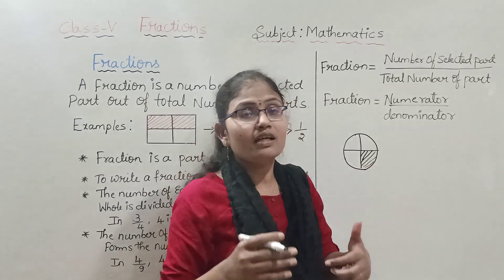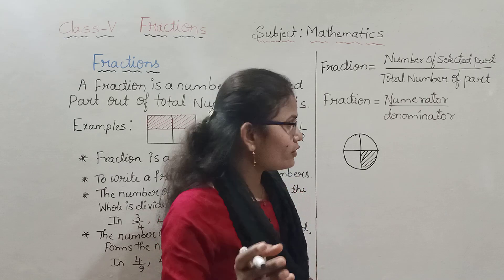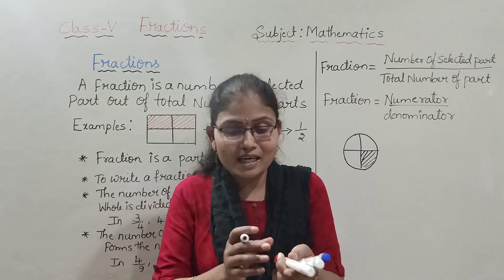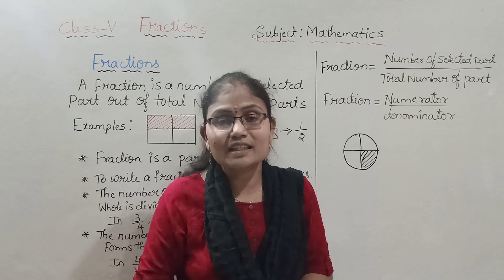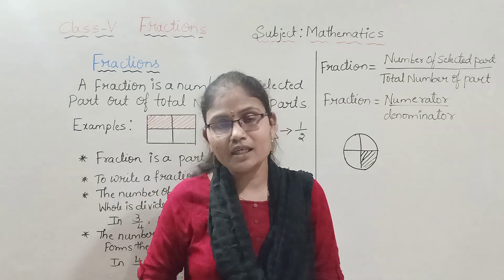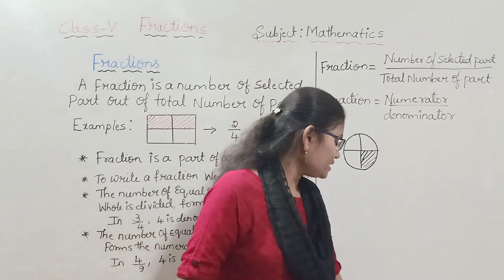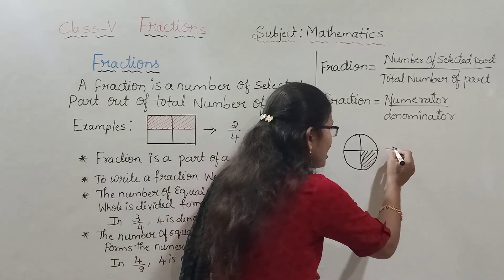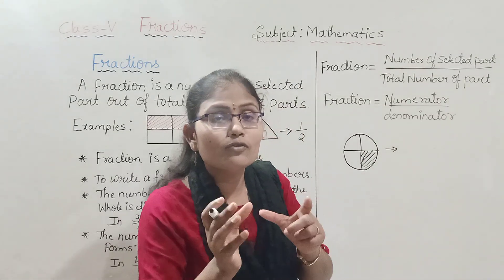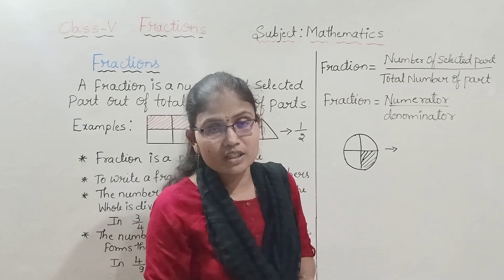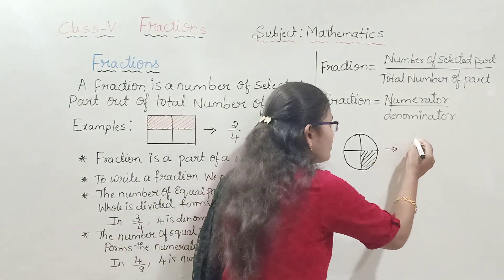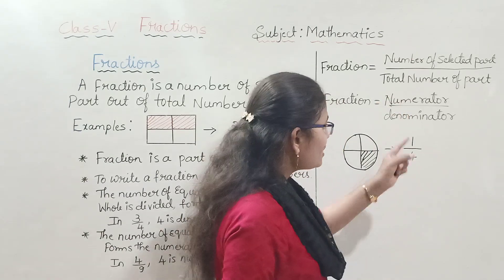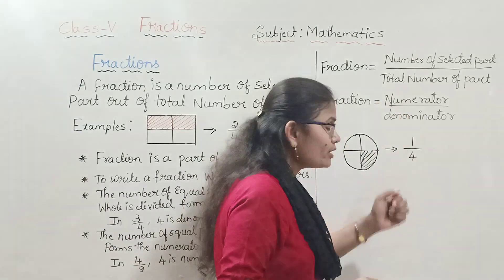Now how are we going to represent this one part as a number? For example, if you take a whole object like pens in my hand, you can easily count and represent them as a number. But how do you represent this figure? You have made four equal parts and selected one part. So: one part selected out of four equal parts — that is how you represent it.